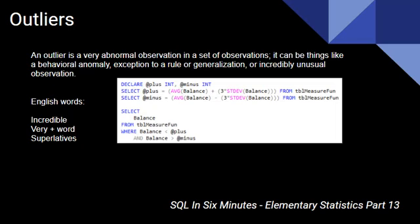Now, in this definition of outlier, we are going to be using plus or minus three times the standard deviation in addition to the average of whatever we are looking at. It should be noted that three times the standard deviation may not be the definition of the outlier mathematically. So it is going to be average plus a multiple of the standard deviation, and it depends on the data set.